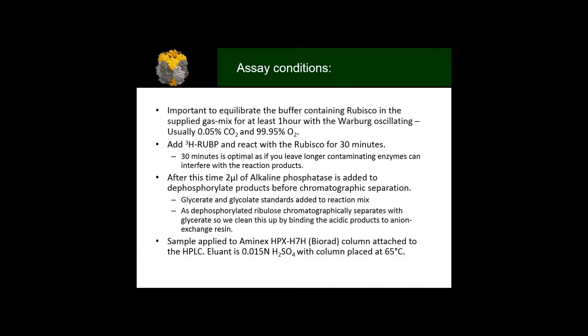We oscillate for one hour to make sure the solution is equilibrated in these gases. Then we start the reaction with tritiated RuBP. After 30 minutes, we add alkaline phosphatase, which is crucial to remove the phosphates off the products. Then we do another chromatography step that removes any unreacted ribulose, which is a problem because it separates at the same stage as glycerate. The final step is to apply it to an HPLC chromatography column, the Aminex HPX column at 65 degrees C.